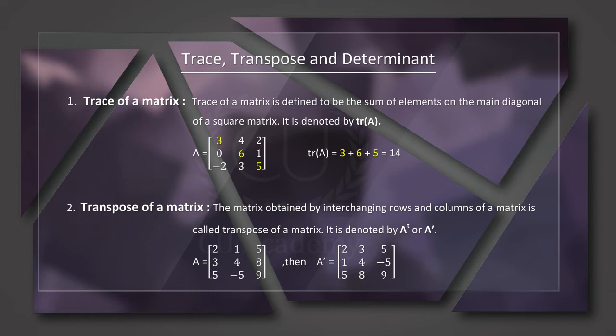If the matrix is A, its transpose is denoted by A-transpose. It is denoted by AT or A-prime. We represent the transpose as AT or A-prime. Is it clear?